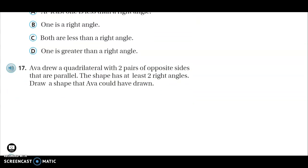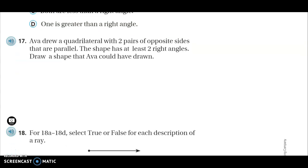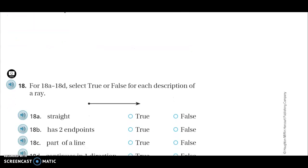And our last question that we are going to do today. And this is question number seven. This is number 17, so we are going to have time. Well, we may be able to have time for 17 and 18. Yes, there is no sincere list. 17. Ava drew a quadrilateral of two pairs of opposite sides that are parallel. The shape has at least two right angles.